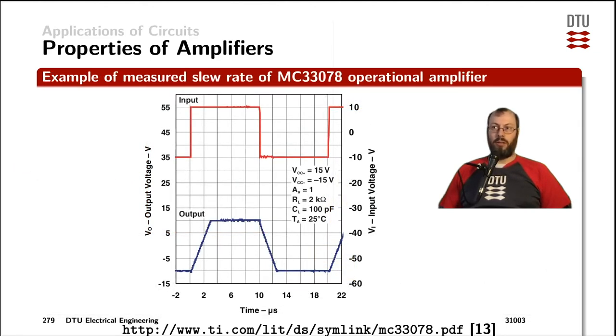The slew rate is also shown in the datasheet of the operational amplifier MC33078. The red input voltage is referred to the right side of the diagram, so it's stepping between plus 10 and minus 10 as the reference voltage.